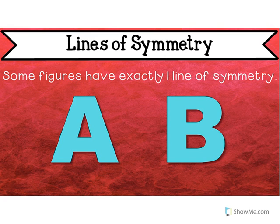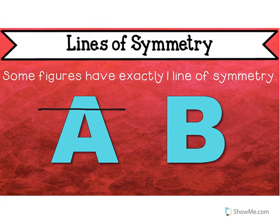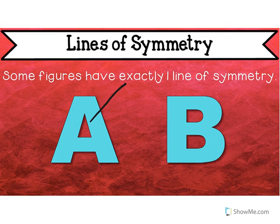Some figures have exactly one line of symmetry. If I folded this letter on the line I'm about to draw, ask yourself: is it the same on both sides? If I drew it here — no, it's not. What if I drew it up here? No, it's not. If I folded it, it wouldn't be the same on both sides. What if I did it like this?